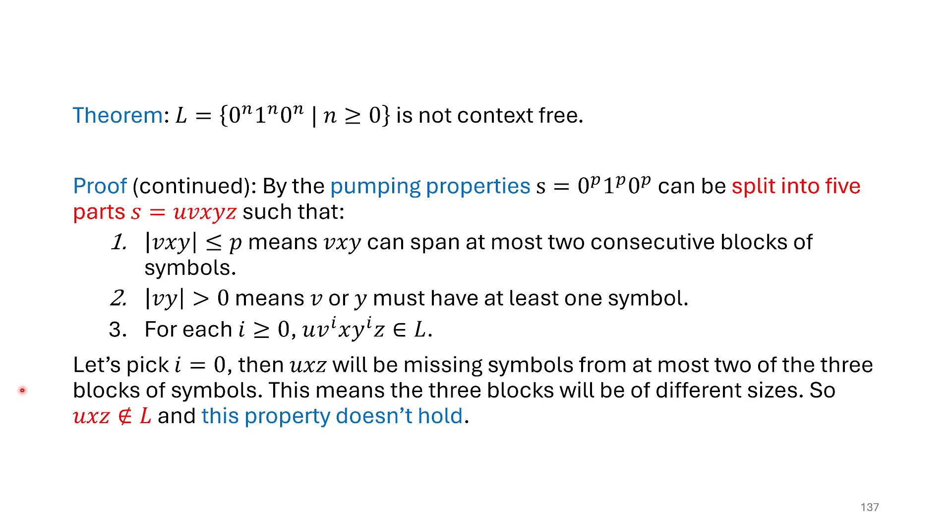And that leaves us with now our last bit. Well, what happens when we pump? And so I'm going to say, well, I, in this case, often in these ones that I find it's helpful to pump down, at least that's the first thing that I try. And if it works, I'm happy. So I'm going to start by pumping down with i equals zero. That means taking out the v and the y. Now we've said up here that they span at most two consecutive blocks. So if we take out symbols, then those symbols will be missing from at most two of the three blocks. So I'm not going to say which two blocks, because I don't know how you're going to split it up. But if it spanned the first two blocks, we might be missing symbols from the first block, first block, or the second block, but then we won't be missing any from the third block. And that's the argument that I'm making here. So since we will be missing symbols from at most two of the blocks, but we won't be missing from the third one, this means that all three blocks will be of different sizes. So our string must not be in the language. So our property does not hold.